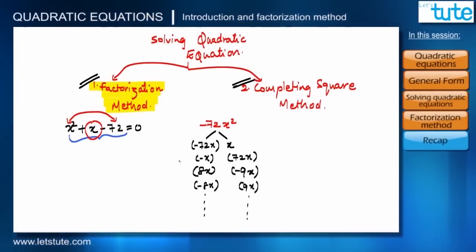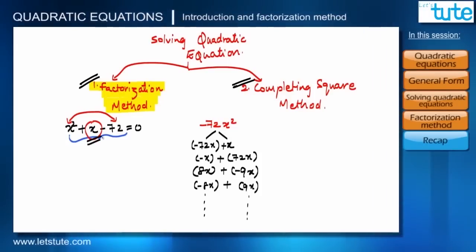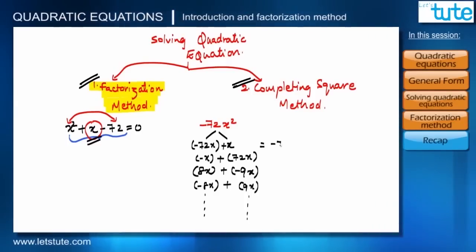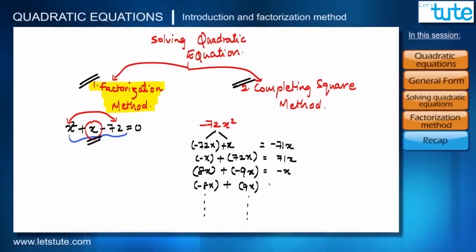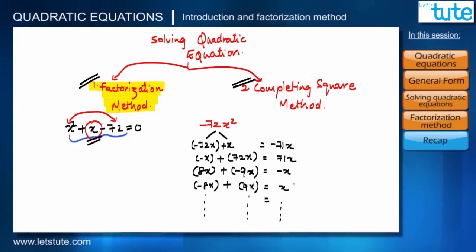The condition is that adding the two factors should give the middle term x. Checking: −72x + x = −71x; −x + 72x = 71x; 8x + (−9x) = −x; (−8x) + 9x = x. The last pair gives us x as required, so we use −8x and 9x.